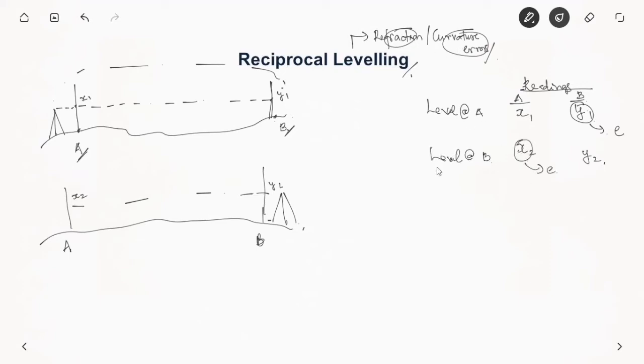So if there were no errors, the difference in levels between B and A should be, which I am denoting as h. So that should have been equal to y1 minus x1 or y2 minus x2. But here because of this citing at a longer distance we have this refraction or curvature errors. So here we are saying that y1 will have an error of E and x2 will have an error of E.